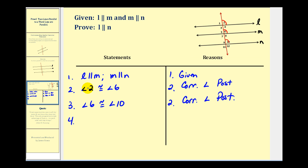And now we can state that angle two is congruent to angle ten. Notice they're connected by both being congruent to angle six. This should have been step three. So the reason for step four would be the transitive property.